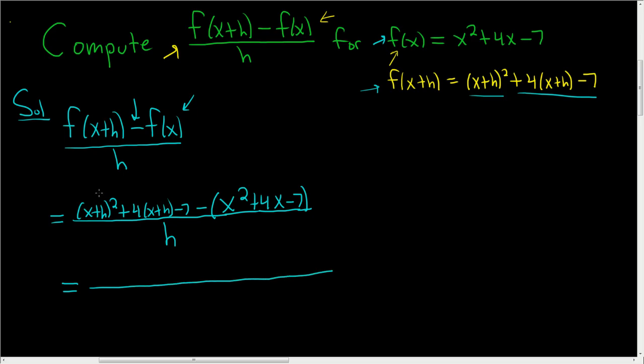Now, in order to multiply out this first piece here, there's a shortcut. You just square the x, so x squared. You multiply the x and the h and you double them, so 2xh. And then you square the h, so plus h squared. Then distributing, 4 times x is 4x, and then 4 times h is simply 4h.